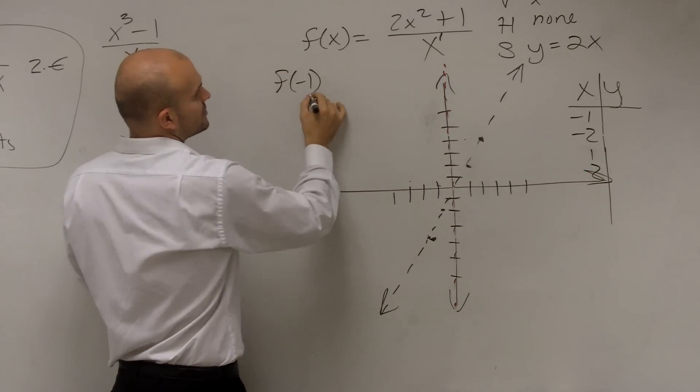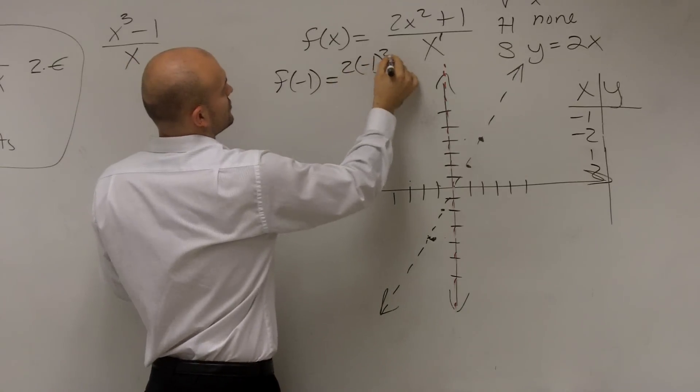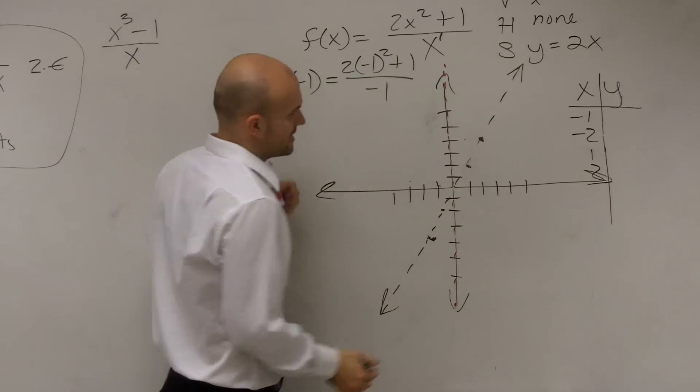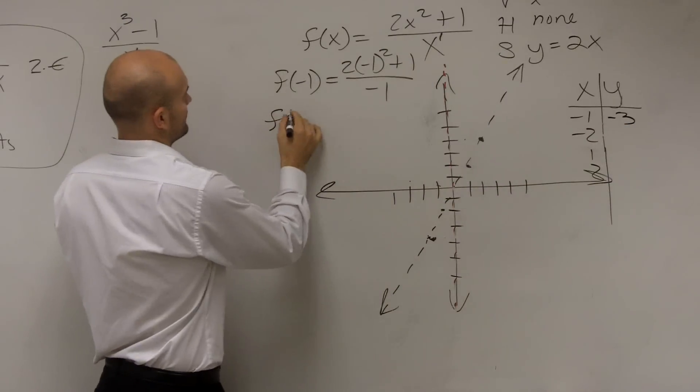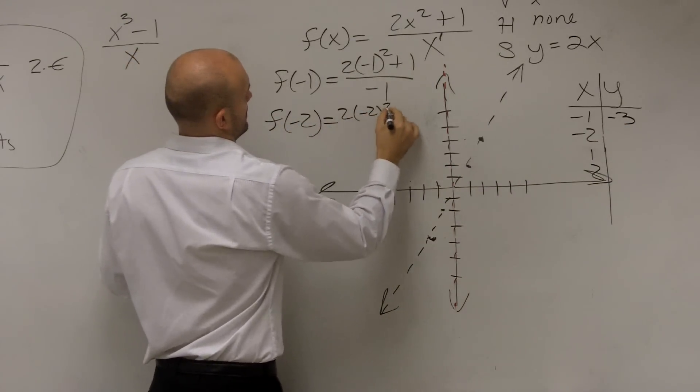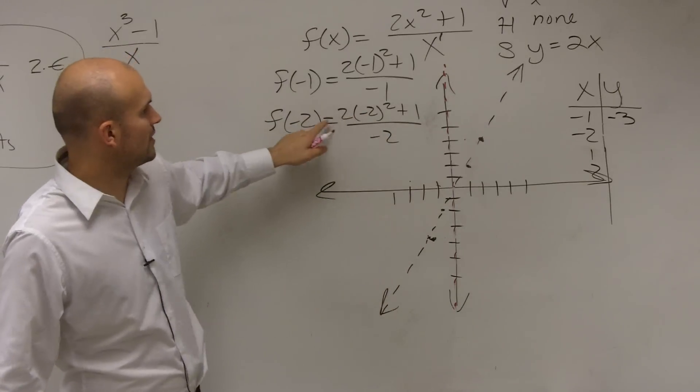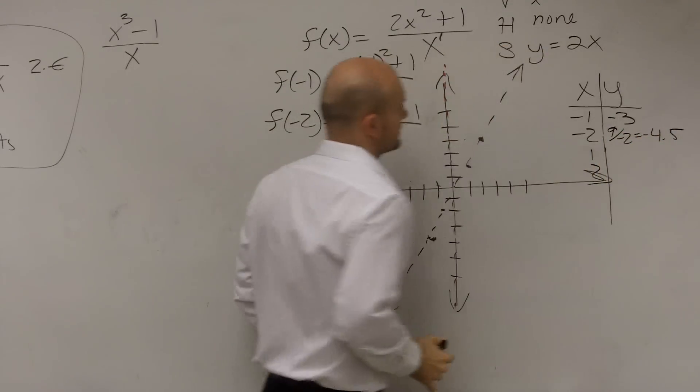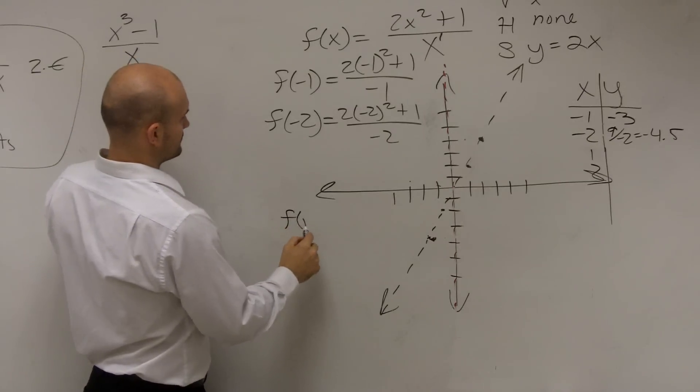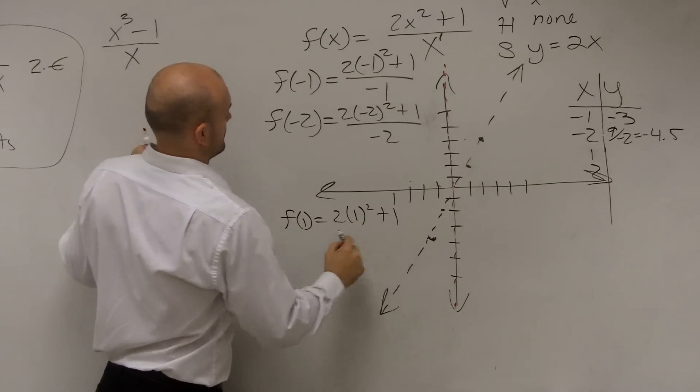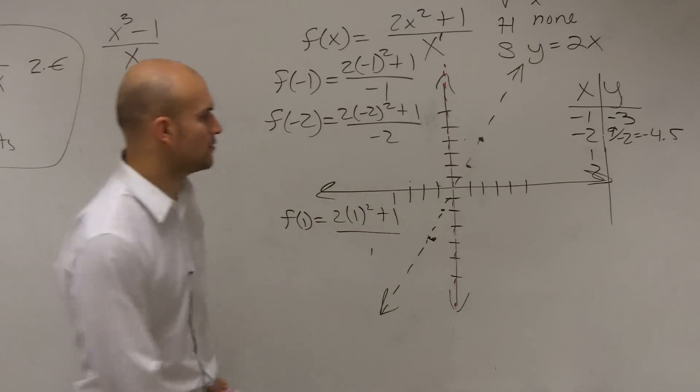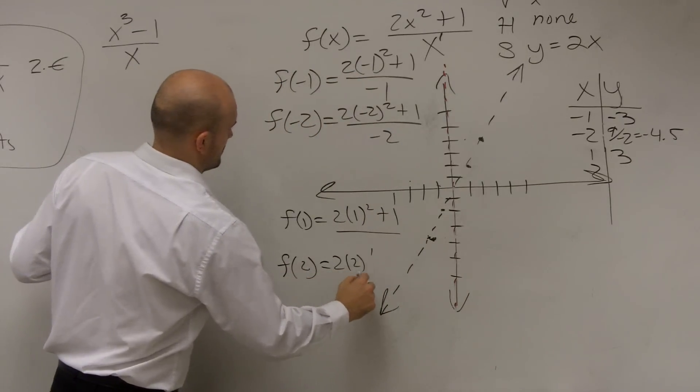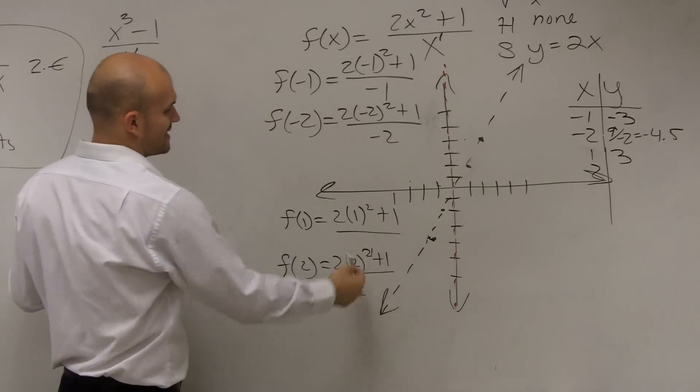So we just plug it in. If you have a calculator, you can use the table function. f of x equals negative 2 squared plus 1 divided by negative 1. This becomes 1 times 2, 3. 3 over negative 1 is a negative 3. Negative 2. That becomes positive 4, 8, 9, 9 divided by negative 2. Then we do f of 1. Again, that's 1, 2, 3 over 1, which is 3. And let's do f of 2. 4, 8, 9, 9 divided by 2.